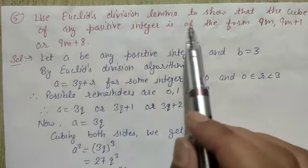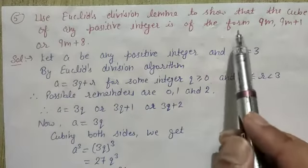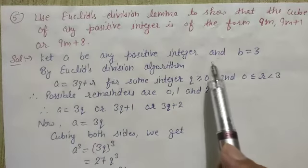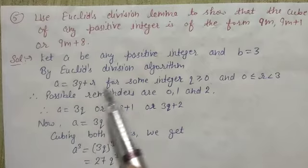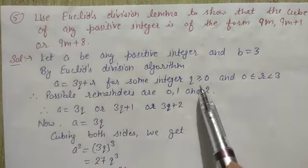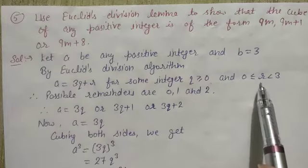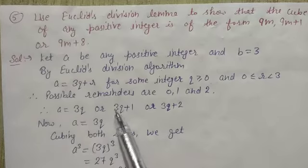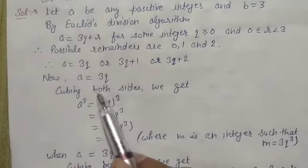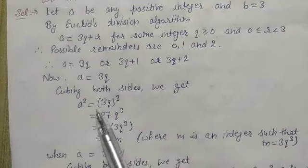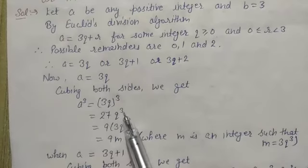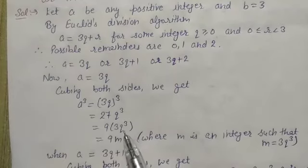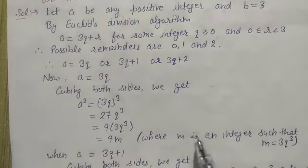Question 5: use Euclid's division lemma to show that the cube of any positive integer is of the form 9m, 9m+1, or 9m+8. So let a be any positive integer and b equals to 3. By Euclid's division algorithm, a equals to 3q+r for some integer q greater than or equal to 0, and 0 less than or equal to r less than 3. Possible remainders are 0, 1, and 2, so a equals to 3q or 3q+1 or 3q+2. When a equals to 3q, cubing both sides: a³ equals (3q)³ equals 27q³. Taking 9 common: 9(3q³). Putting 3q³ equals m, where m is an integer, we get a³ equals 9m.